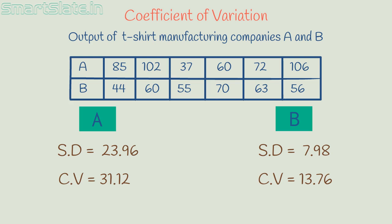Coefficient of variation of factory A is more than factory B. Coefficient of variation of factory B has smaller value compared to factory A. What it means is factory B is more consistent in giving output.